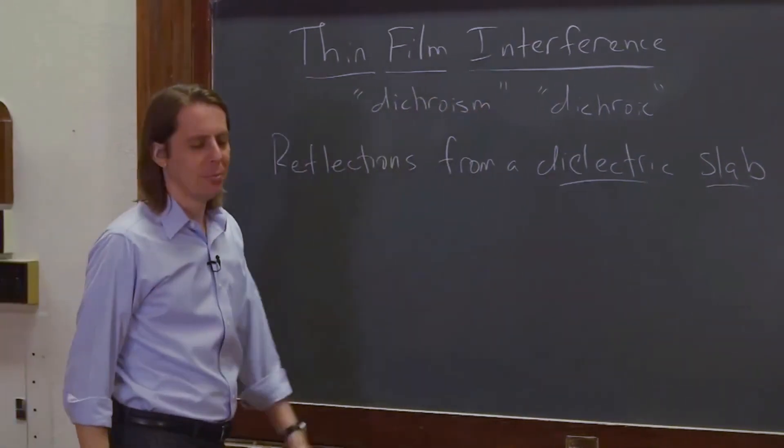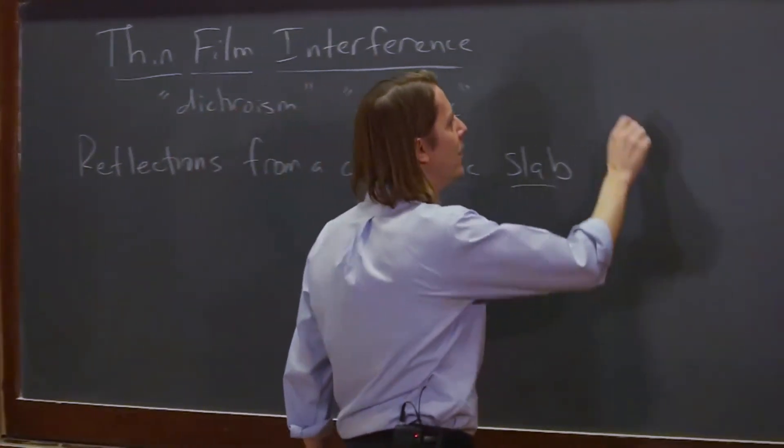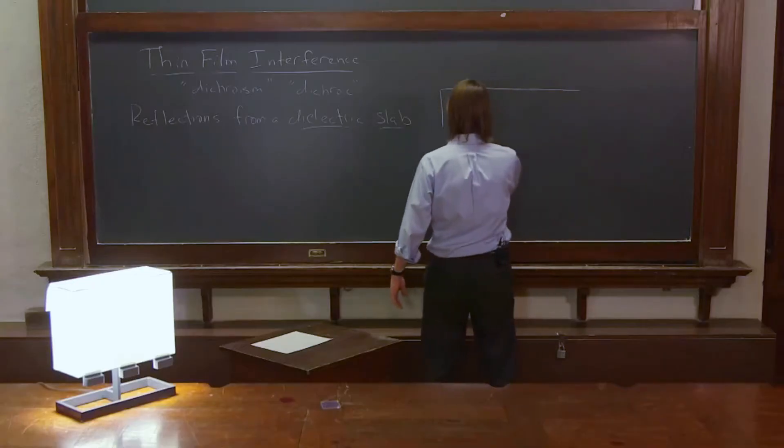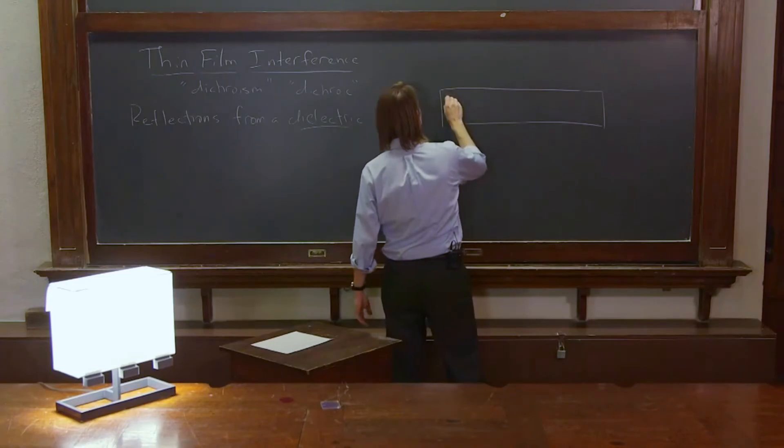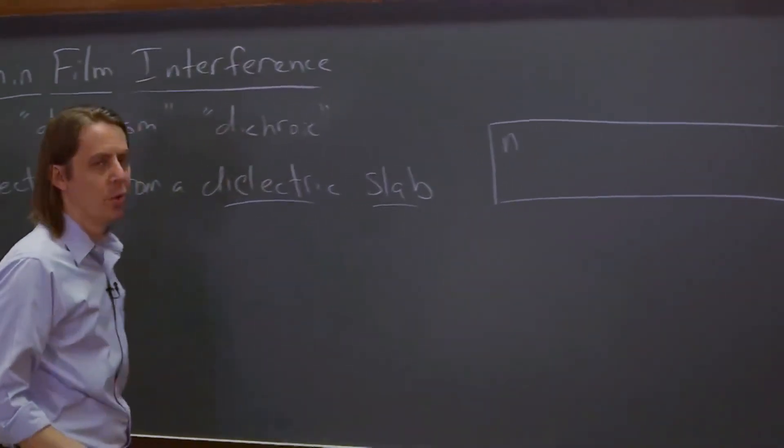That's as pretty as we can make it, unfortunately. The reflections from a dielectric slab. Okay, so here is our dielectric slab. Oh, and it's so beautiful. Look at it. And it has an index n. How lovely. And then outside we'll say the index is one.